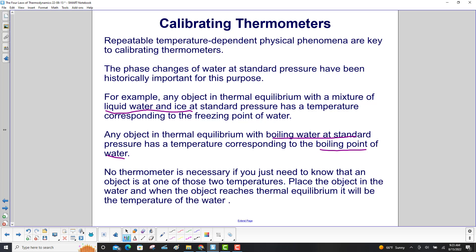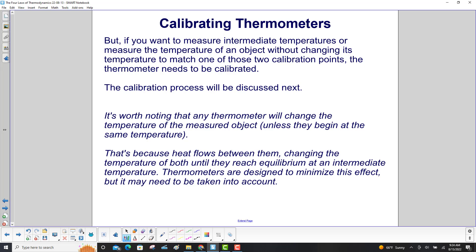No thermometer is necessary if you just need to know that an object is at one of those two temperatures. Place the object in the water, and when it reaches thermal equilibrium, it will be the temperature of the water. But if you want to measure intermediate temperatures or measure the temperature of an object without changing its temperature to match one of those two calibration points, the thermometer needs to be calibrated.